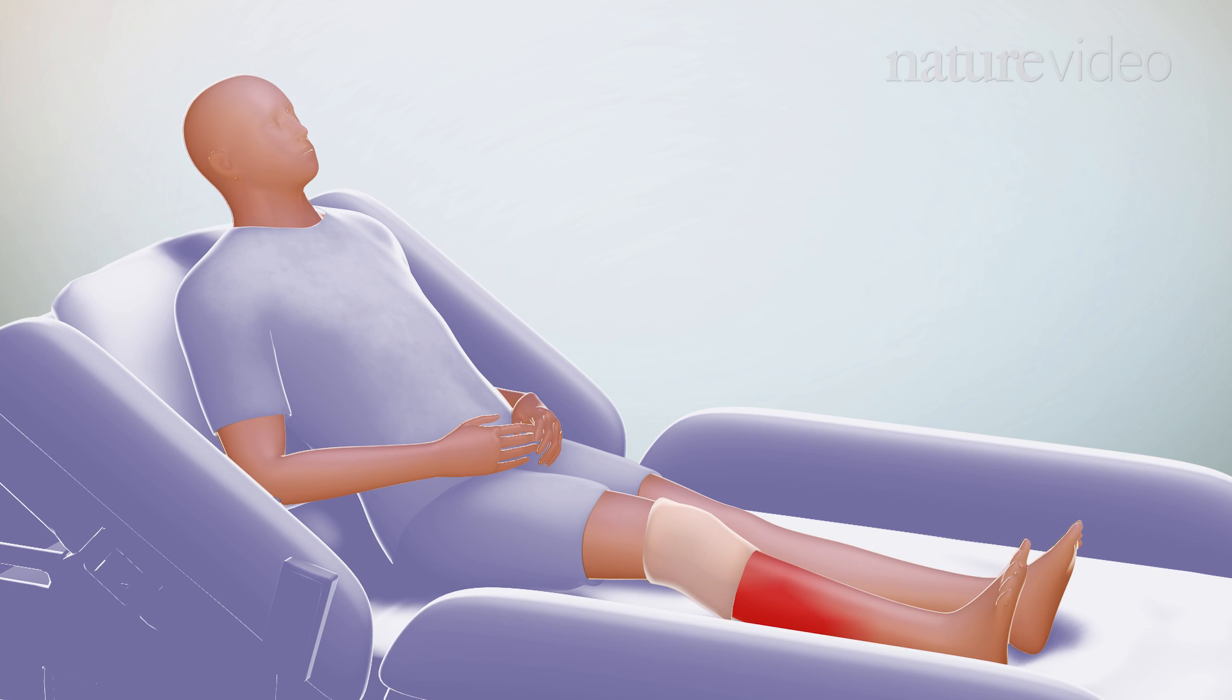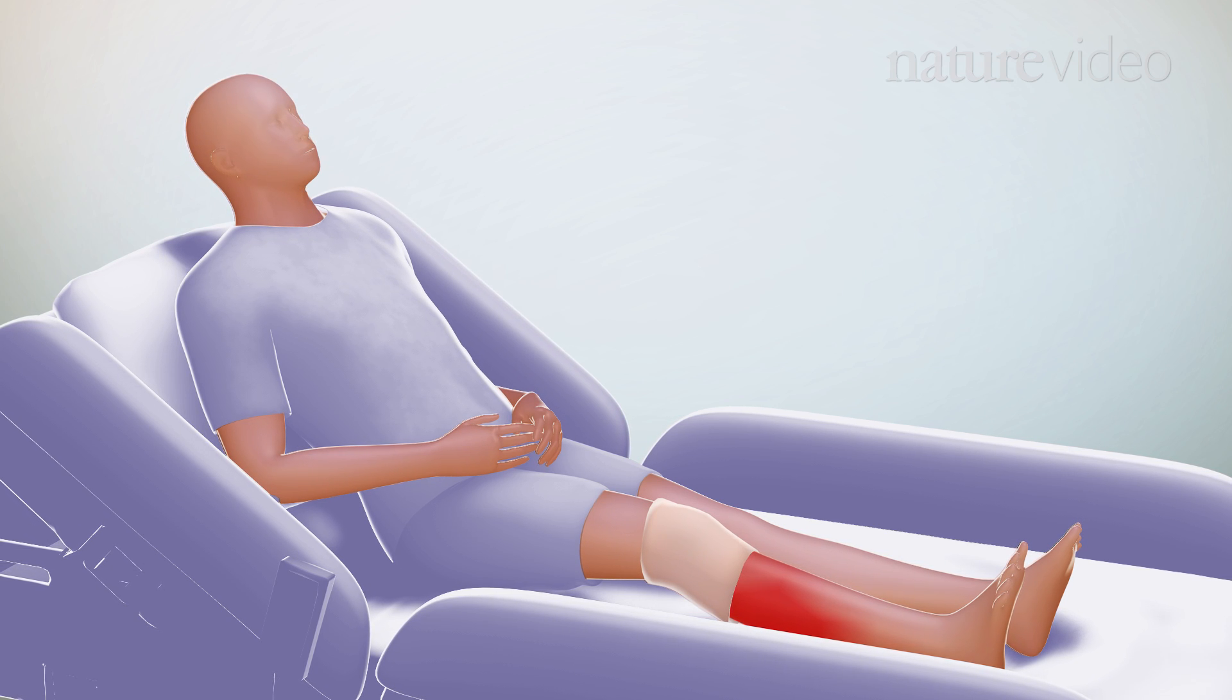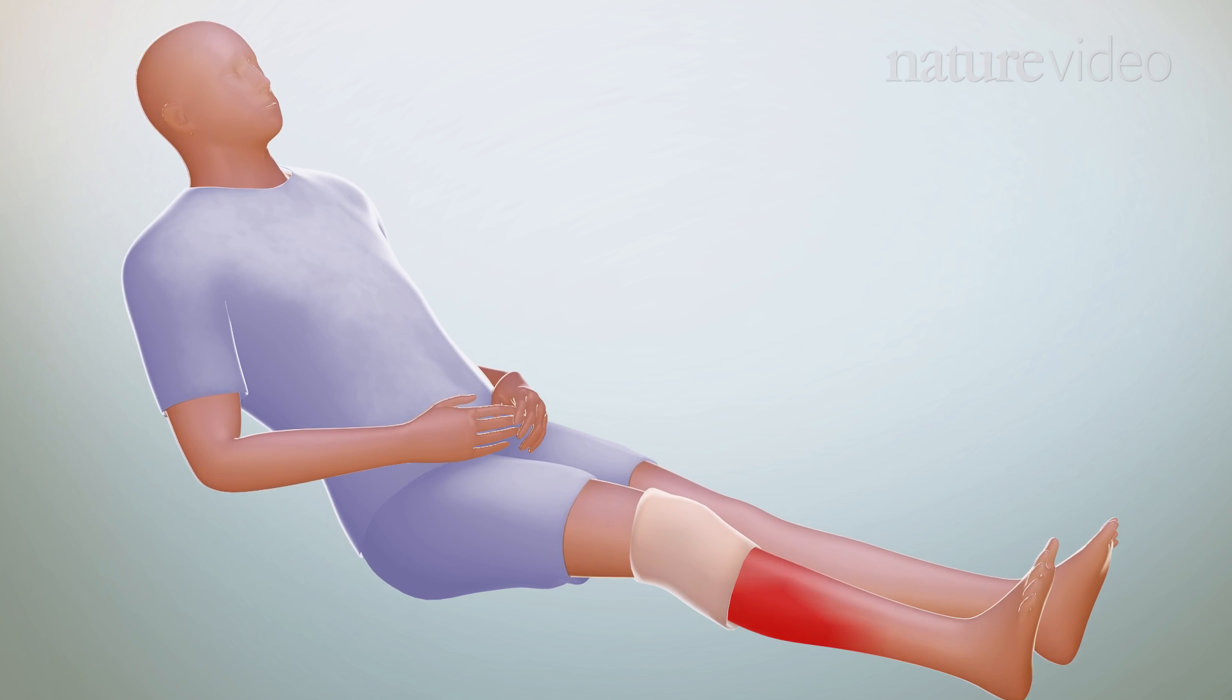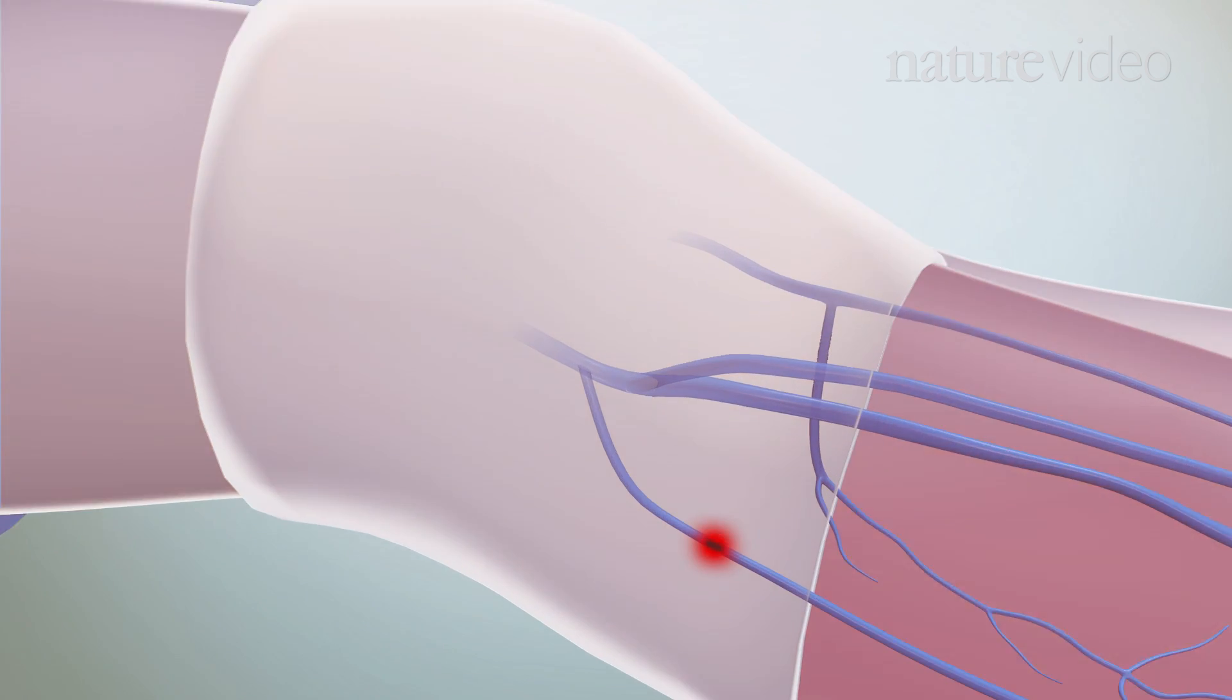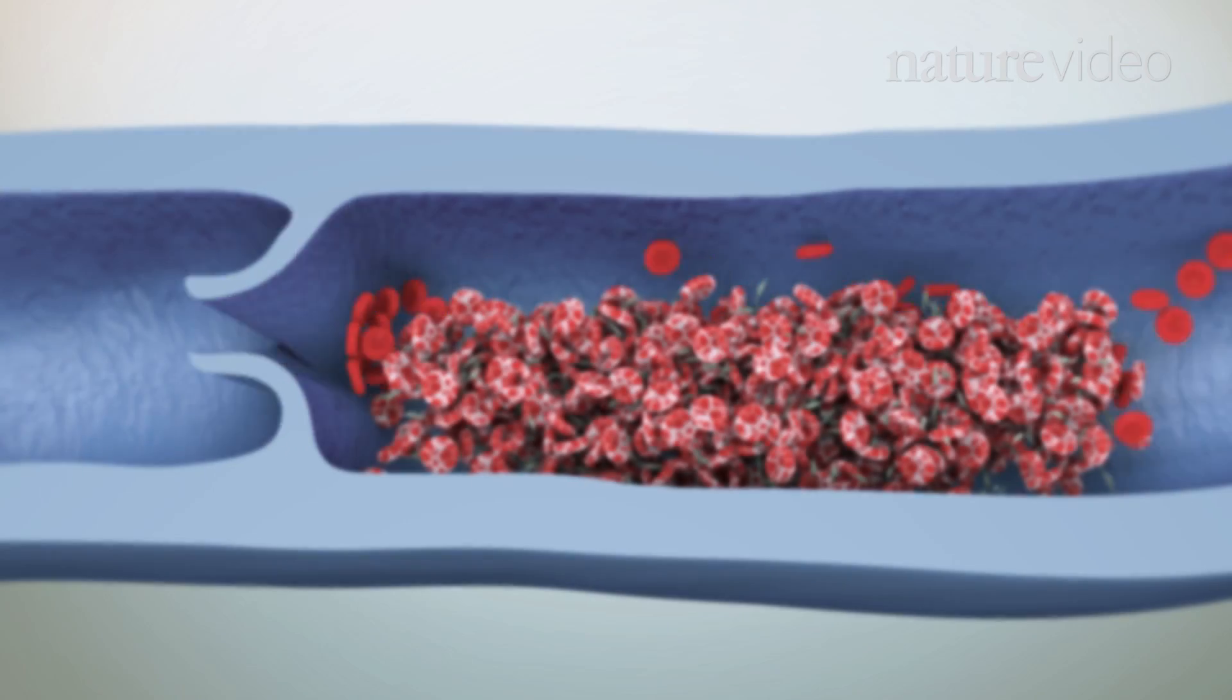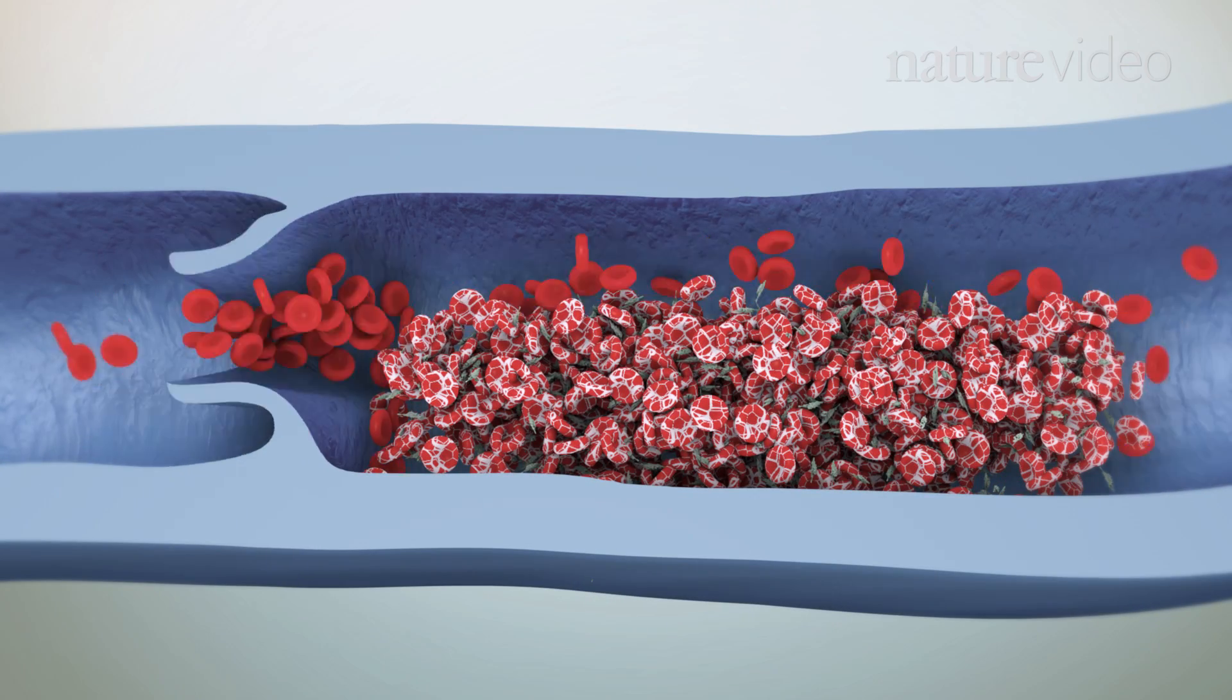In deep vein thrombosis, a clot forms in the calf or thigh as a result of stasis or slow blood flow. For example, in people who experience long periods of inactivity, or in response to inflammatory mediators from surgery, trauma, or infections.